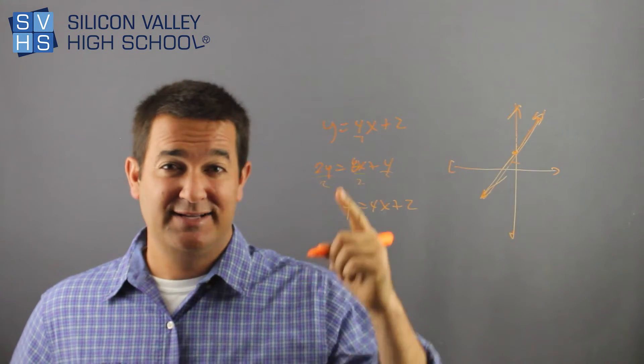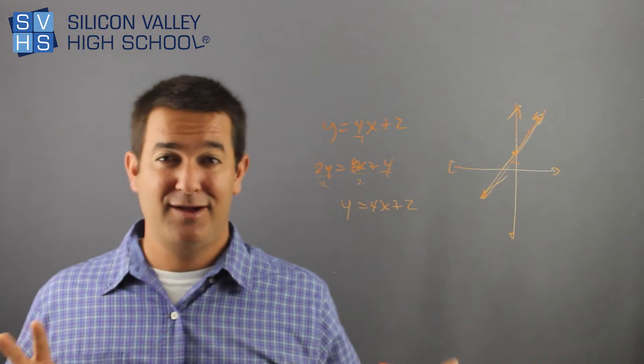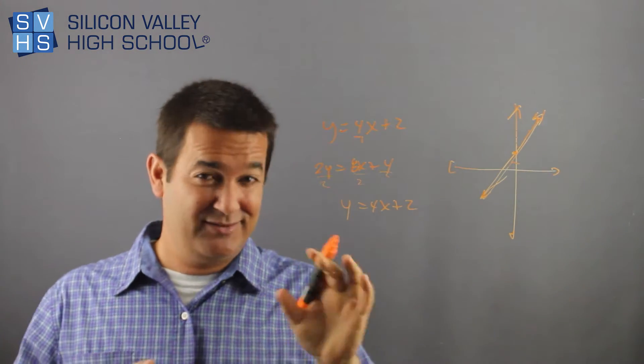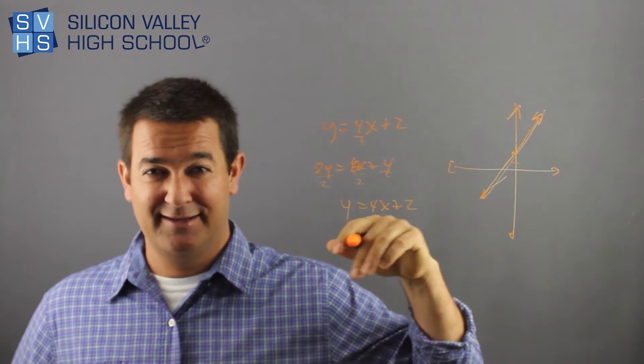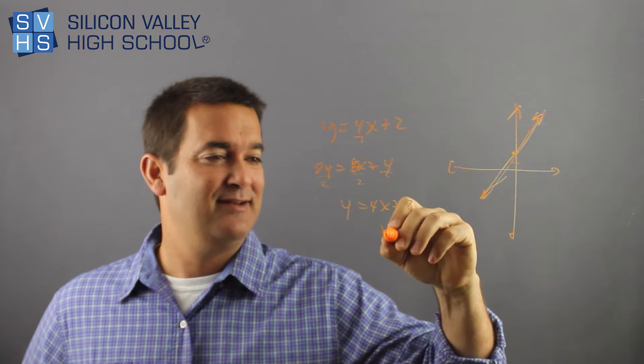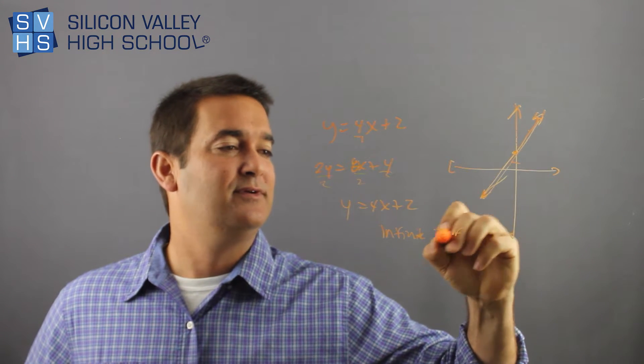So when the two linear equations are identical, they don't look like it at first glance. Like at first glance, it didn't say hey, these are totally identical, but after you manipulate them, they will be. If this happens, the answer is not like an answer, it is infinite number of solutions. And that's it.